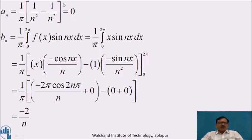Now bₙ = (1/π) ∫₀^(2π) f(x) sin nx dx = (1/π) ∫₀^(2π) x sin nx dx. Integrating by parts: x · (−cos nx/n) − (−sin nx/n²), with limits 0 to 2π. Putting upper limit: −2π cos 2nπ/n = −2π/n; lower limit gives 0. Therefore bₙ = −2/n.